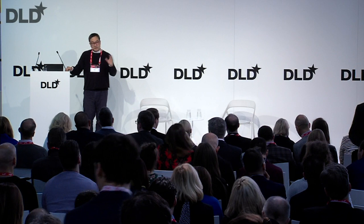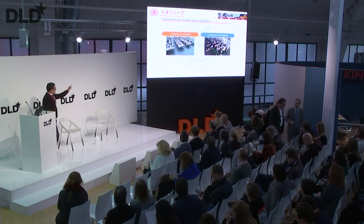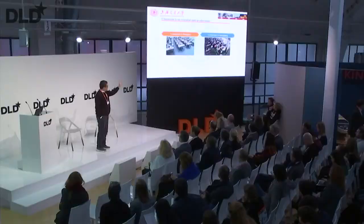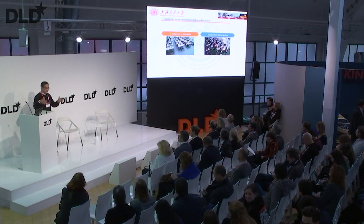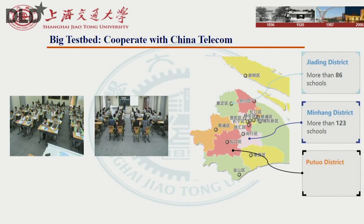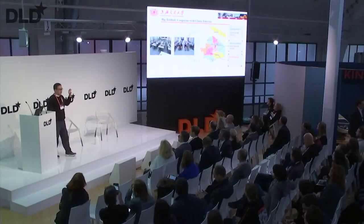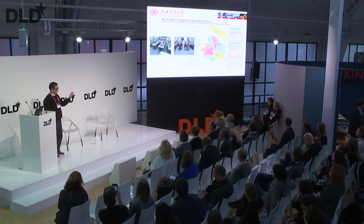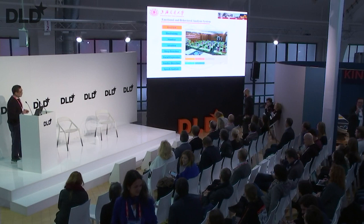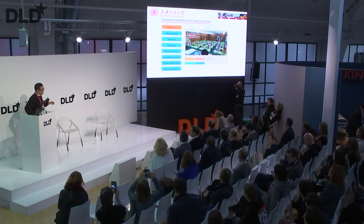Our research group is asking: can we make the traditional classroom more efficient, to create time and space for students to learn other things? Typically, in eastern China like Shanghai, there are about 40 students in one classroom, but in central China there are more than 60 students. We set up a test bed in Shanghai connecting up to 100 schools — that means up to 500 classrooms — and we process real data from classrooms every day. We also expanded our test bed to Chongqing, where we record the whole teaching process.